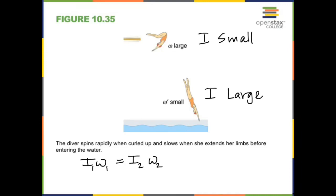Another example of conservation of angular momentum is a diver: she spins rapidly when curled up because her rotational inertia becomes small as she tucks in, increasing angular velocity. When she extends her limbs just before hitting the water, she slows down as rotational inertia increases. These are the most important quantities and equations in this chapter. Study the problem set to see how these equations are applied, then complete the homework, quiz, and exam.